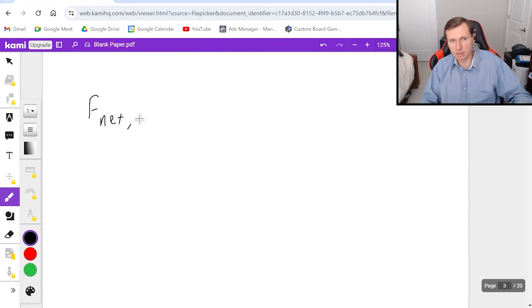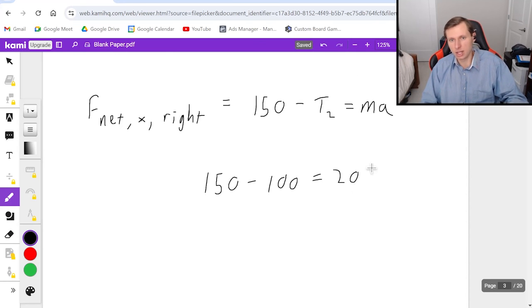But just to prove we could have looked at the right box as well. If I look at F net x right, then that would be the forces pointing to the right, 150 newtons, minus forces pointing to the left, which was T2. That equals mass times acceleration. And now I know all these numbers, so I can just plug in. 150 minus T2, which was 100, is equal to the mass, 20 times acceleration, 2.5. 150 minus 100 is 50. 20 times 2.5 is 50. Verifying that my answer is good.